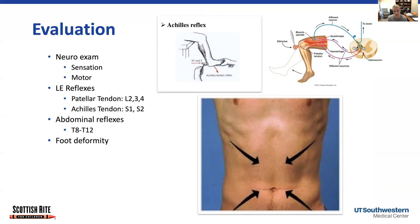The abdominal reflex is done by scratching in the four quadrants around the belly button, and the belly button should jump to the side where you're scratching — you can do that with your fingernail or a pen cap. It's okay for these to be absent as long as they're absent on both sides. If the belly button jumps to one side but not the other, that would be an asymmetric and abnormal finding. We also look for any gross foot abnormality like a cavovarus foot or a significant flat foot on just one side, which can be indicative of an underlying neurologic cause.